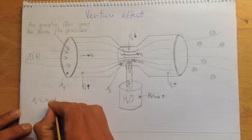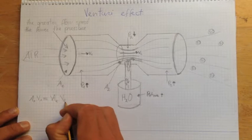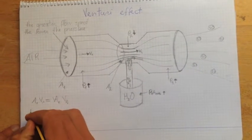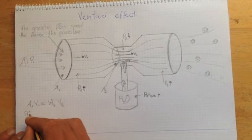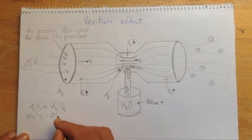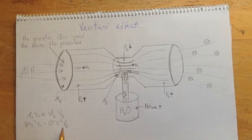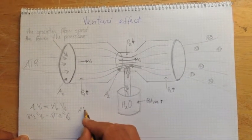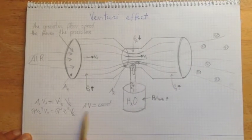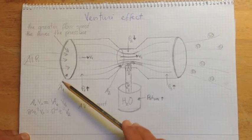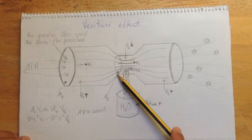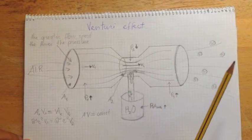So I can write the formula. A V is constant. So for this reason, if you see, the smaller the size of this cross-section area is, that means the bigger the speed is.